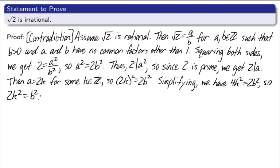Now let's simplify this a little bit and see where we can get. Simplifying, we have 4k squared equals 2b squared. So, then dividing by 2, we get 2k squared is equal to b squared. Now this is actually almost done. Take a look. We have 2k squared equal to b squared. So we get the 2 divides b squared.